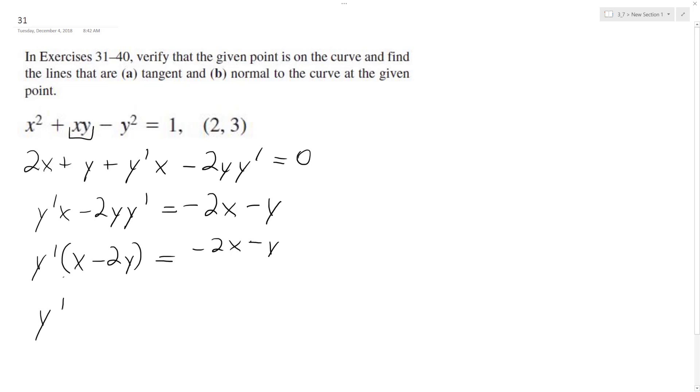Divide through and we just end up with y prime is equal to negative 2x minus y over x minus 2y. Okay, so that'll work.